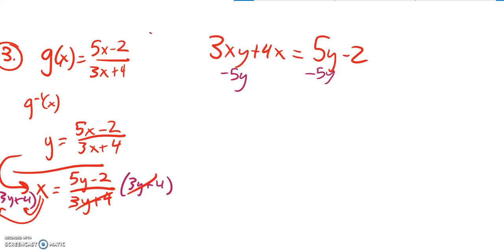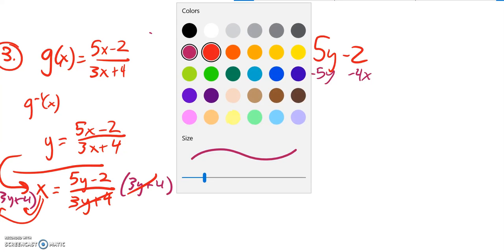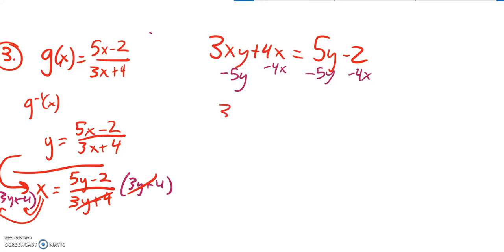And notice this term does not have a y in it, so I'm going to subtract 4x from both sides as well to get it out of the way. So that leaves me here with 3xy minus 5y, right, because that's a 0, that's a 0. Equals negative 4x minus 2.